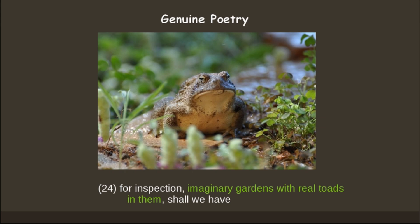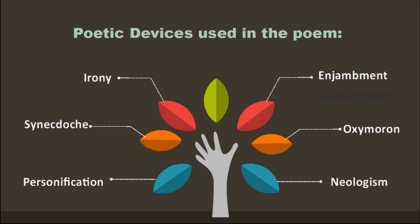Genuine poetry is everything there is — we cannot distinguish it from fiction or reality. The poetic devices used in the poem are irony, synecdoche, personification, enjambment, oxymoron, and neologism.